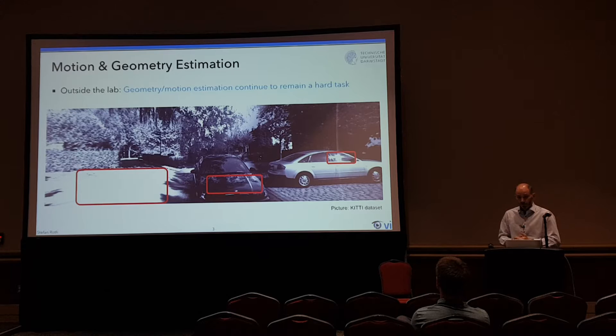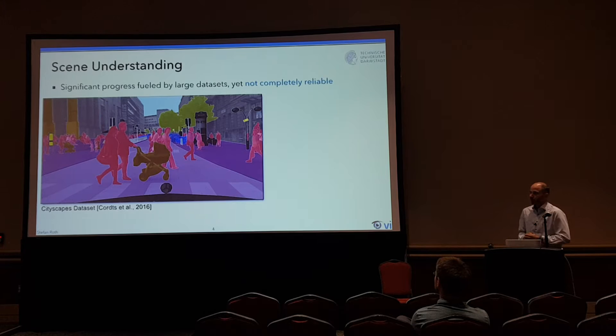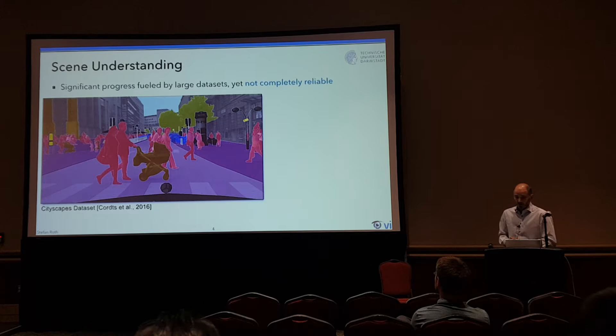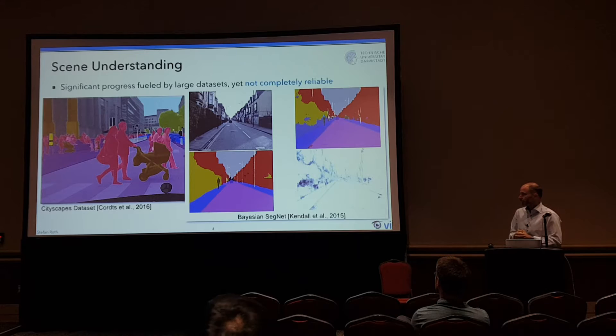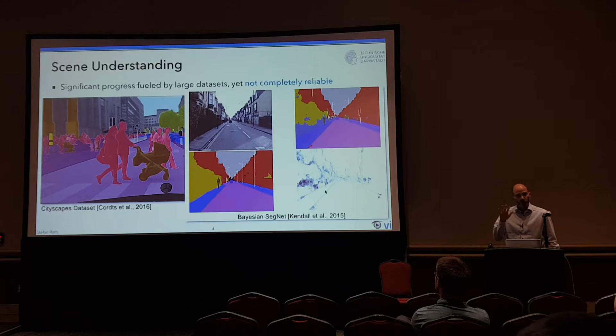One of the observations throughout the day is that it continues to be a hard task — not only because imaging circumstances may be challenging with saturated areas and difficult lighting scenarios, but we've also seen bad weather, vision at night, and many other difficult scenarios. When we switch to semantics, there's been significant progress, as nicely shown by Uwe Frank, pushed by datasets such as Cityscapes or more recently the Mapillary dataset. On the other hand, these approaches are not completely reliable yet. Some people have started working on figuring out when algorithms are not reliable — for example, Bayesian SegNet from Kendall and colleagues, which produces both a semantic estimate and a map of the uncertainty.